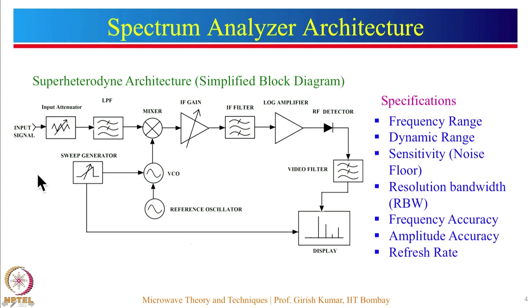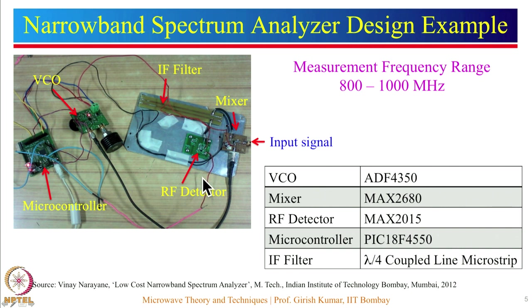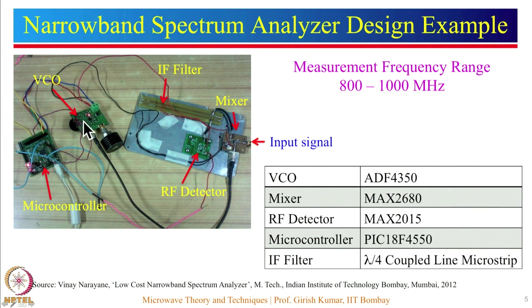The display rate is governed by the frequency of the sawtooth voltage waveform generated by the sweep generator. Let us have a look at a practical spectrum analyzer implemented at IIT Bombay. This is a narrowband spectrum analyzer working from 800 to 1000 megahertz. The system consists of a microcontroller section using PIC 18F 4550, which generates a sawtooth voltage waveform governing the VCO. The VCO or PLL frequency synthesizer is implemented using ADF 4350 IC.